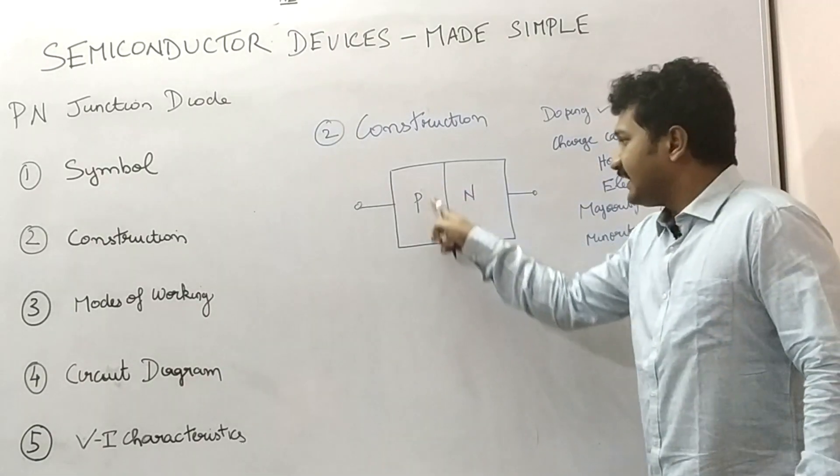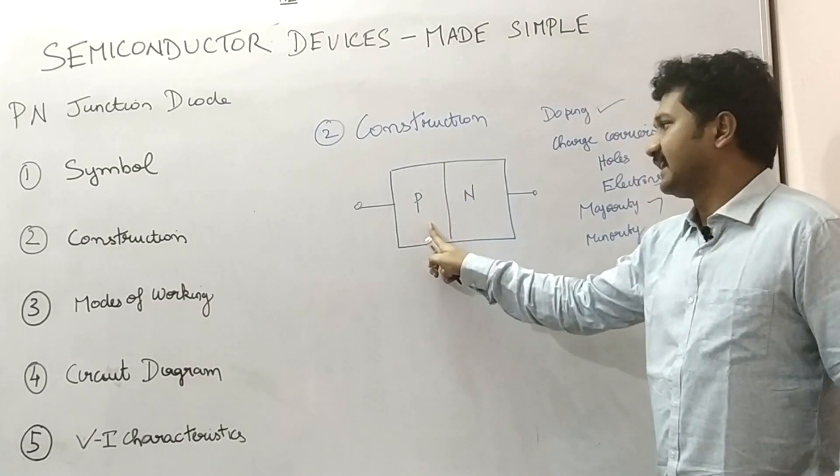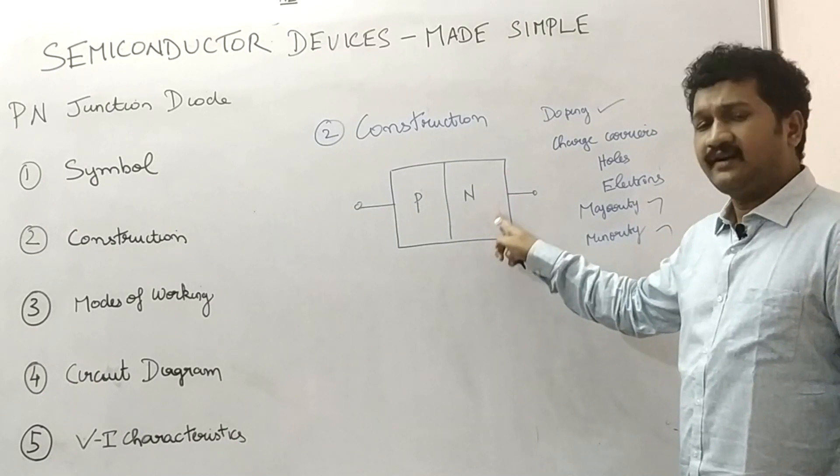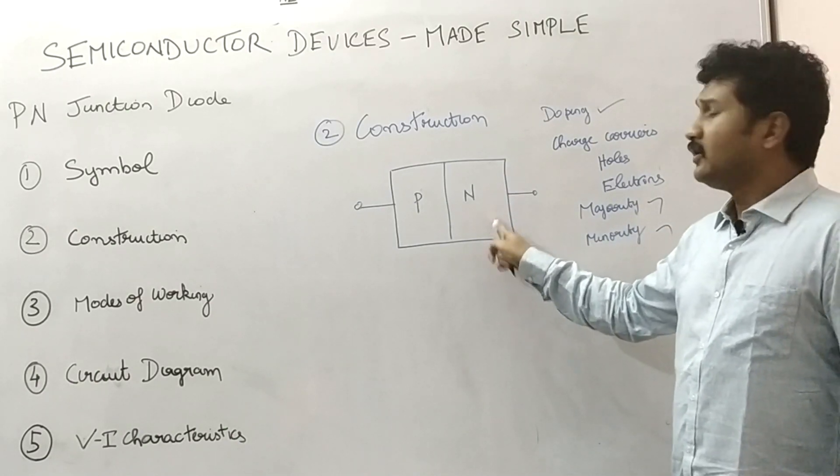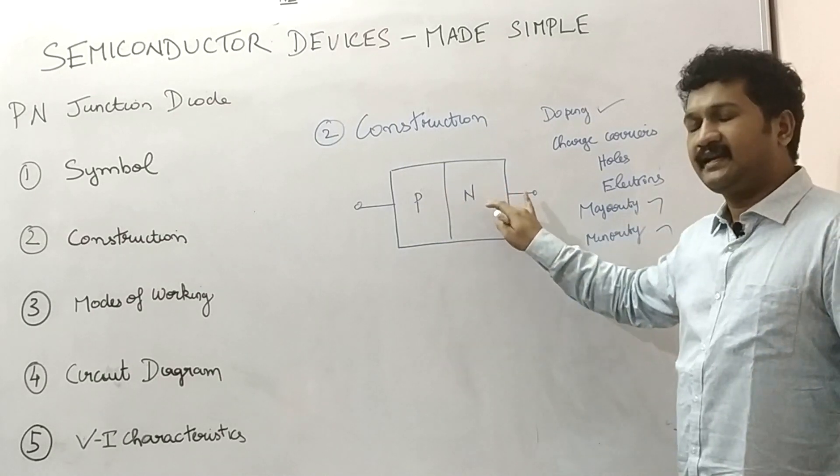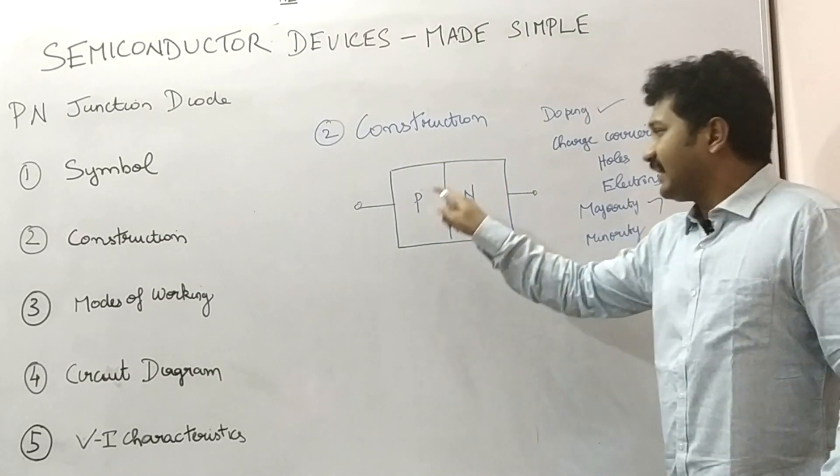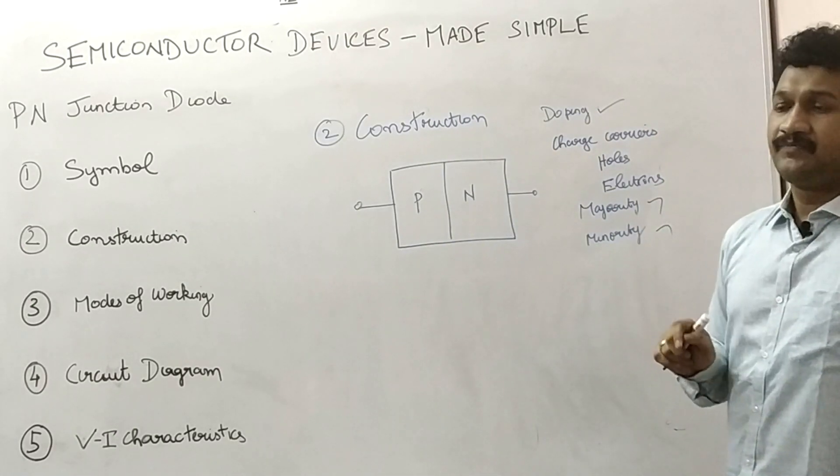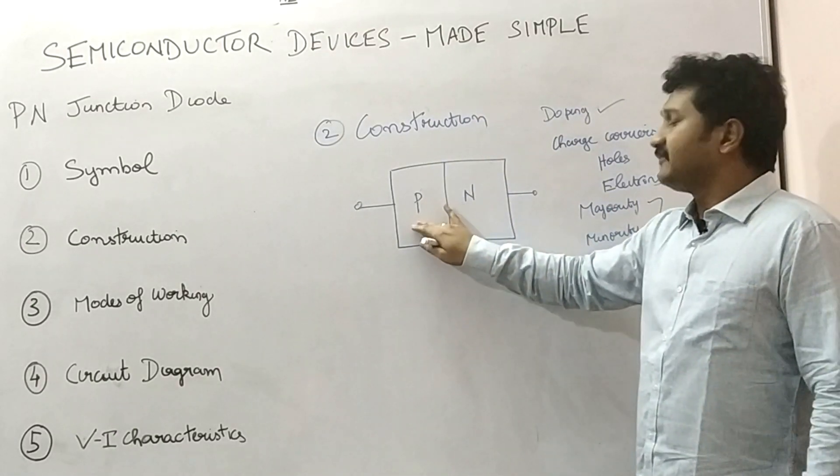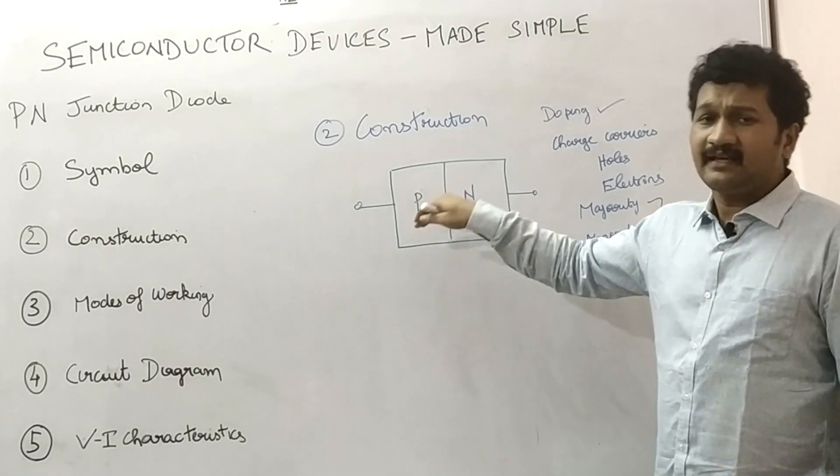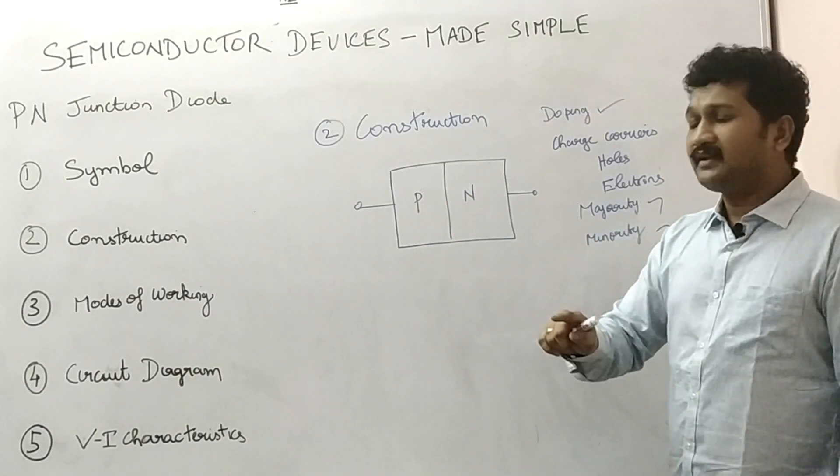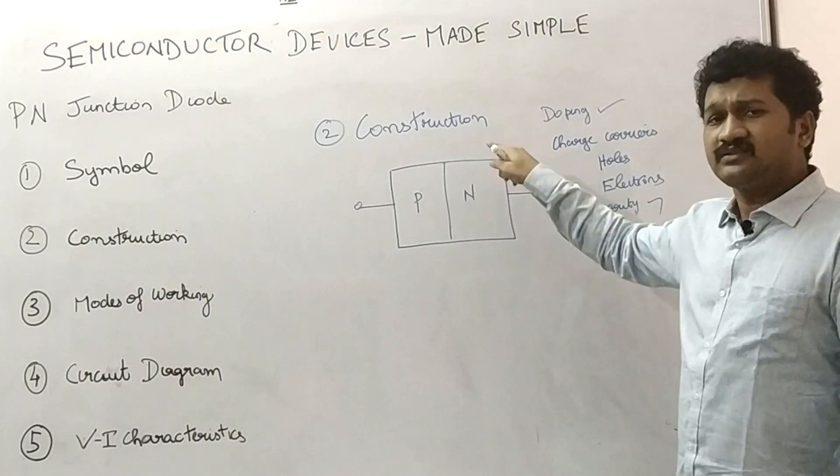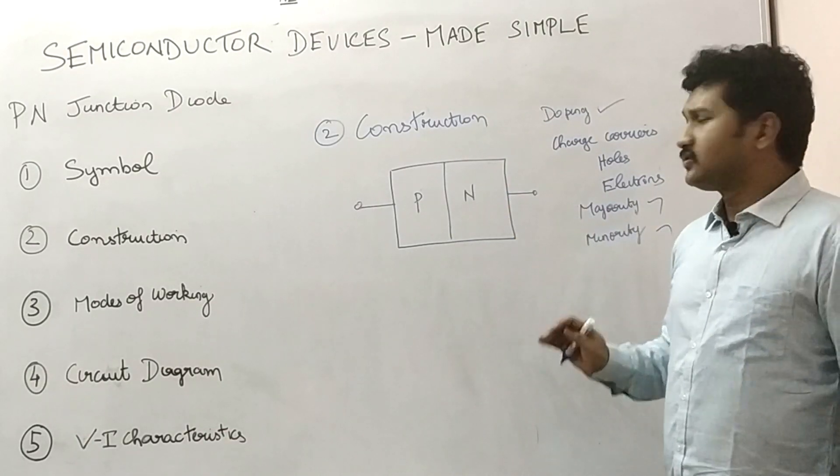P layer has holes as the majority charge carrier. In each and every layer, be it P layer or N layer, if there are majority charge carriers, there will be minority charge carriers. For example, in P layer, if holes are the majority charge carriers, electrons will be the minority charge carriers. Similarly, in N layer, if electrons are the majority charge carriers, holes will be the minority charge carriers.